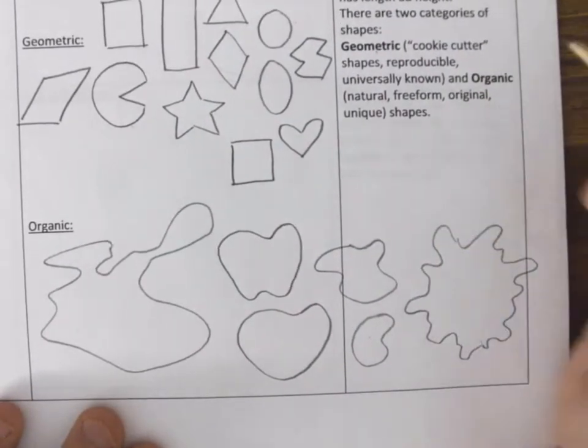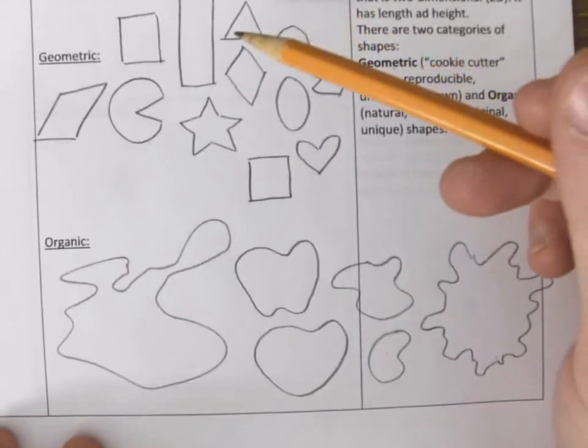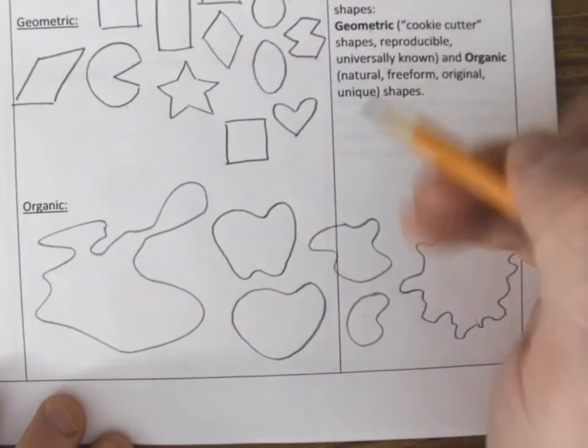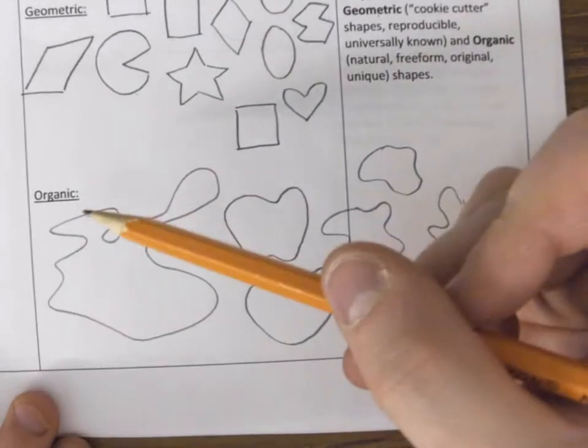Or like even coral. So this is the difference between organic and geometric. Anything that pulls on soft lines that doesn't look basically like a cookie cutter shape is considered organic.